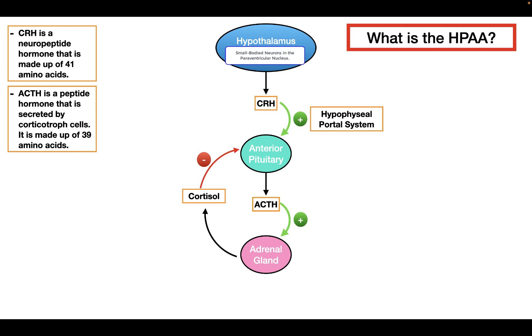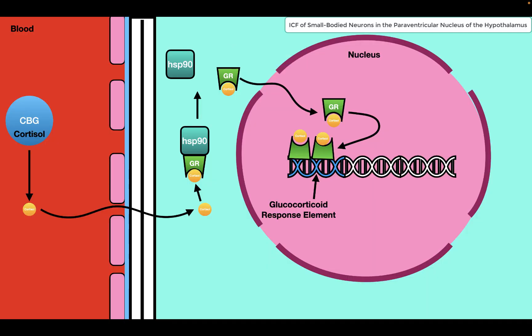That's how cortisol inhibits the anterior pituitary from releasing ACTH. The second region where cortisol exerts negative feedback is the hypothalamus, through a very similar mechanism modulating gene expression. In the hypothalamus, cortisol decreases the expression of CRH genes, reducing CRH synthesis, and also decreases the release of pre-synthesized CRH stored in vesicles. So cortisol decreases both CRH synthesis and release by the small body neurons in the hypothalamus.